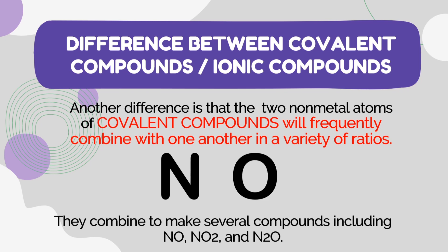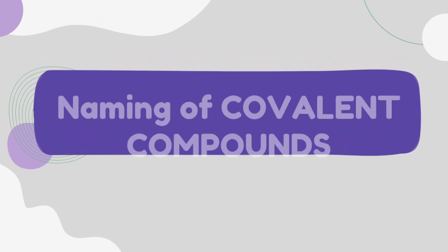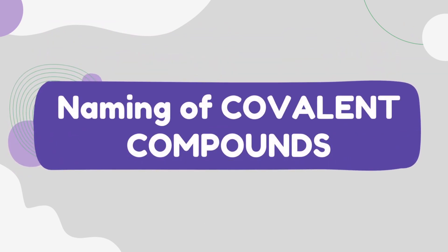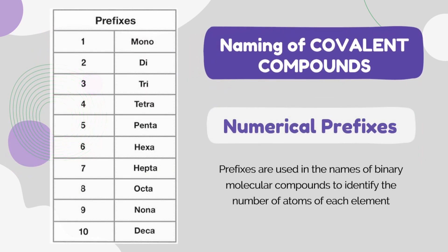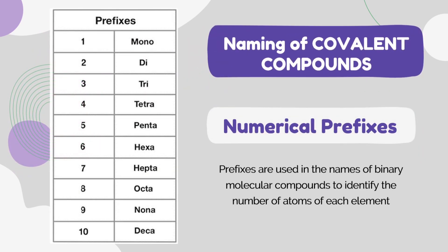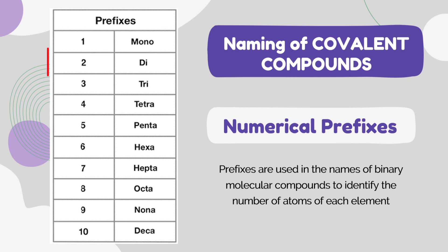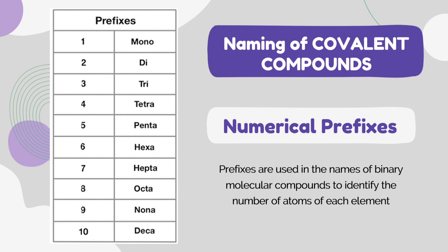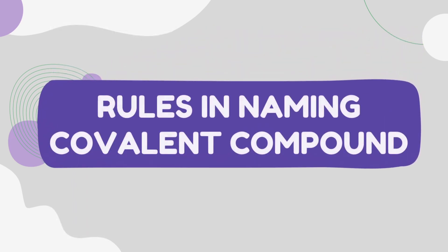In naming covalent compounds, we use numerical prefixes to identify the number of atoms of each element. For example, if there is one atom we use 'mono', if there are two atoms we use 'di', and if there are three atoms we use 'tri', and so on.